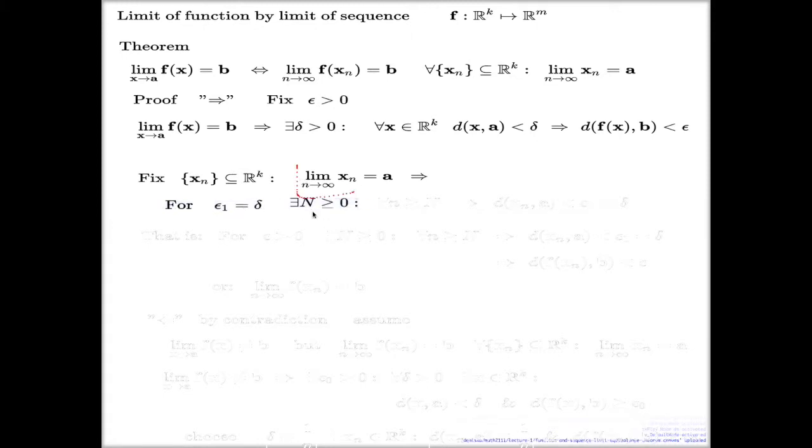Definition of this limit tells me that there is an index n, such that past that index, I have this distance of xn sequence from the a point less than my epsilon 1 chosen to be delta. I just indexed my epsilon with 1 to distinguish it from this epsilon for which we chose delta.